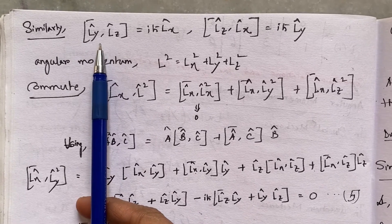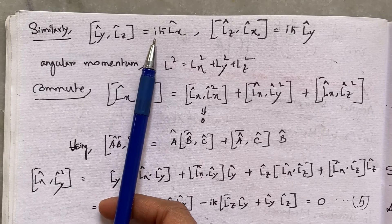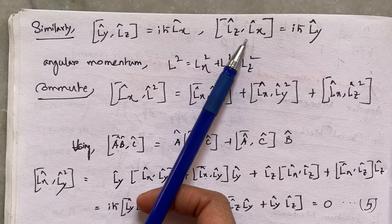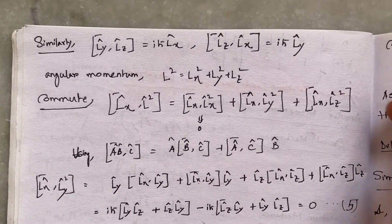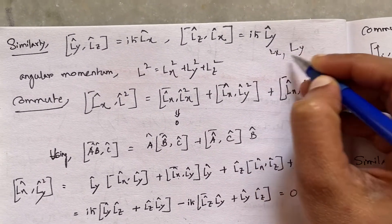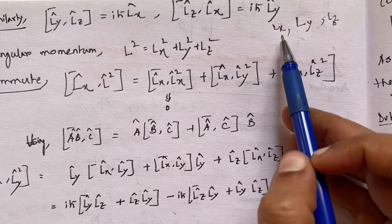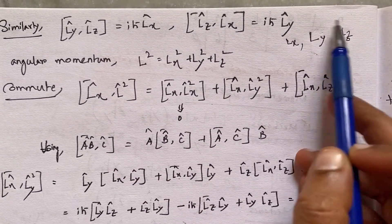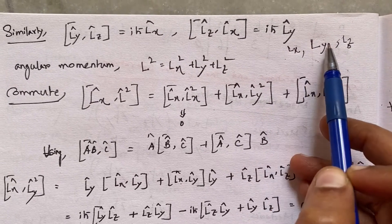Likewise, the commutation relation of LY and LZ gives iℏLX, and the commutation relation of LZ and LX gives iℏLY. This is very easy to remember: writing LX, LY, LZ in order, the commutation of LX and LY gives LZ, LY and LZ gives LX, and LZ and LX gives LY — circulating in the anticlockwise direction.